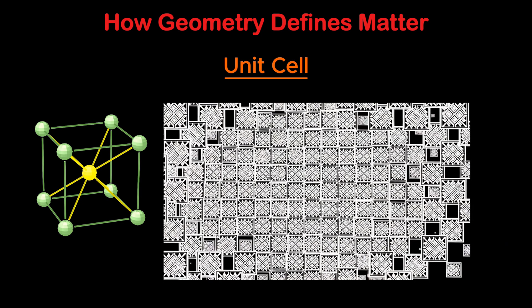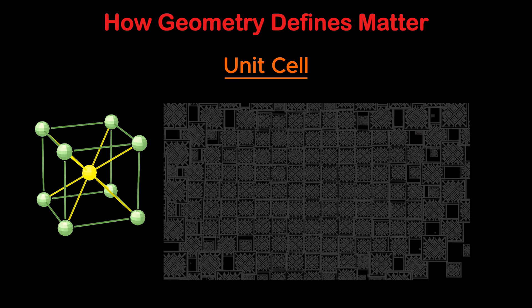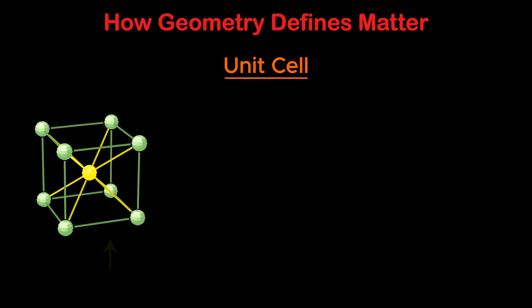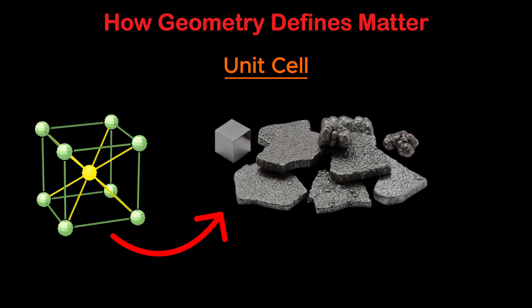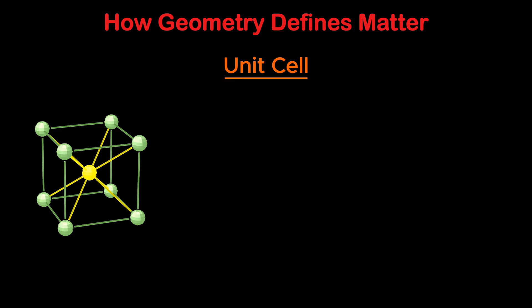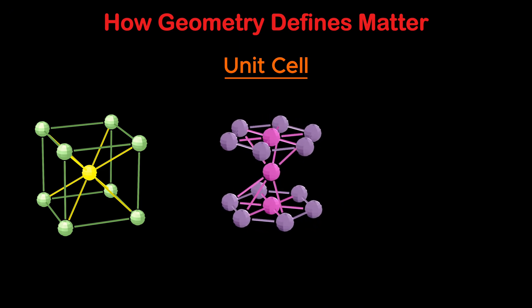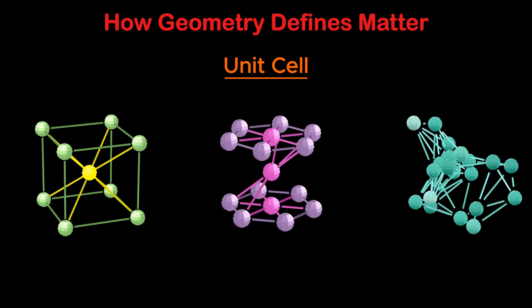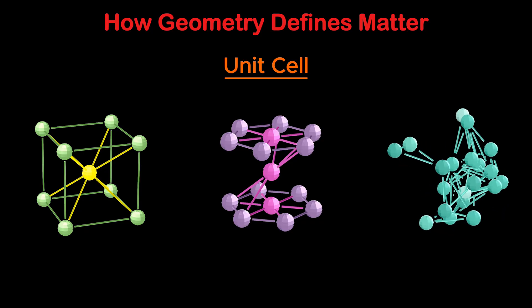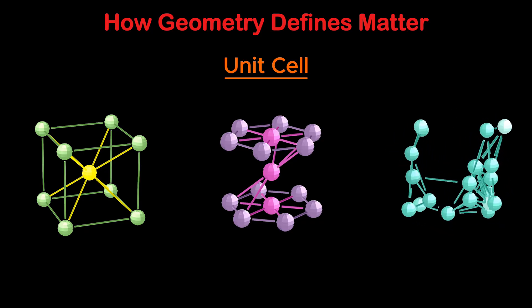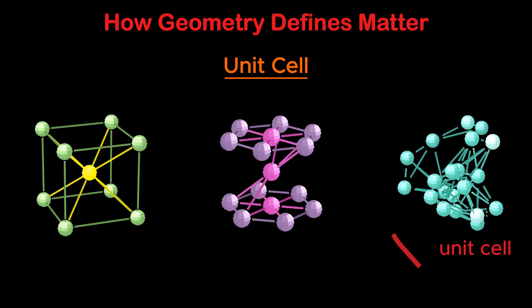Similarly, if you copy the unit cell in all directions, you rebuild the entire crystal. This tiny cell allows scientists to describe an entire crystal by focusing on just one repeating block. For many crystals, the unit cell is cubic. For others, it looks like a hexagonal box, a prism. But in amorphous solids like glass, atoms are not arranged in repeating blocks at all, so there is no unit cell.